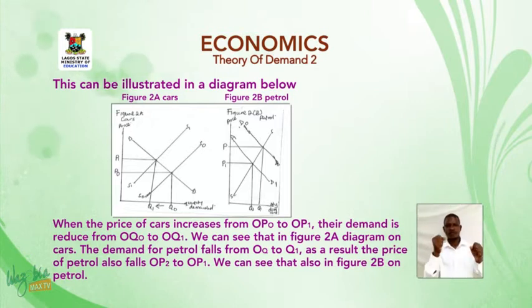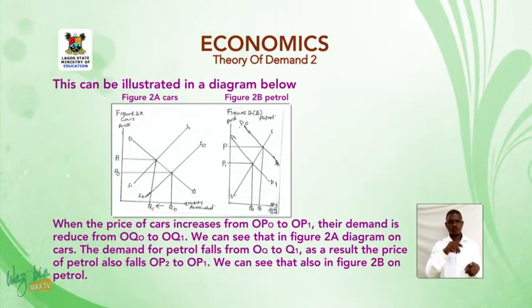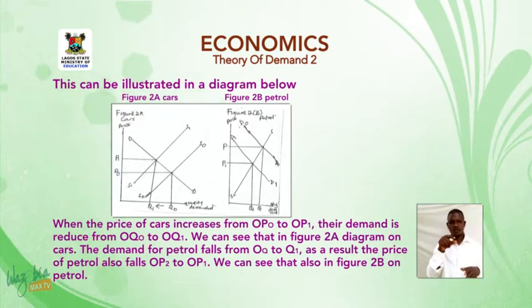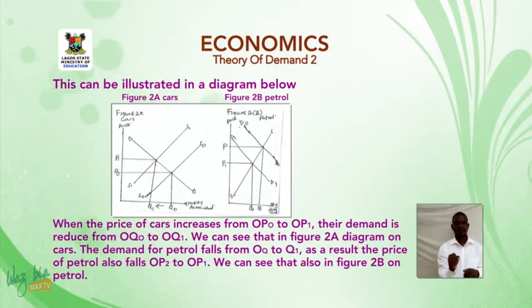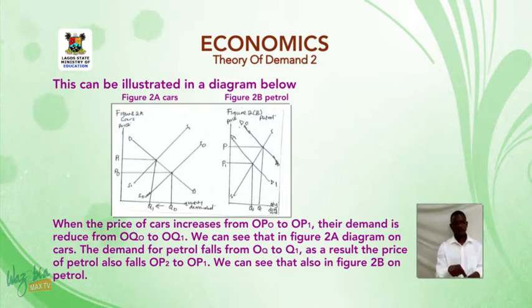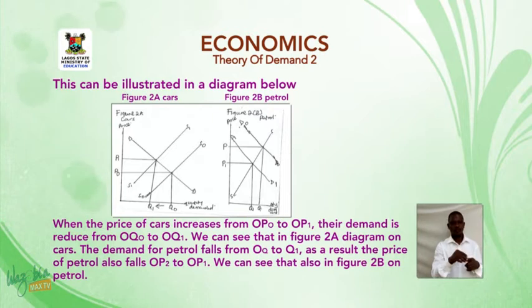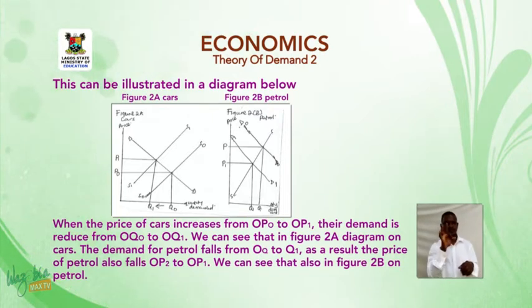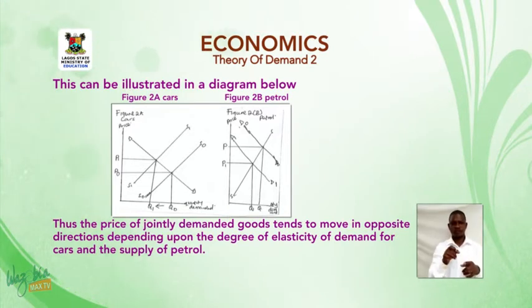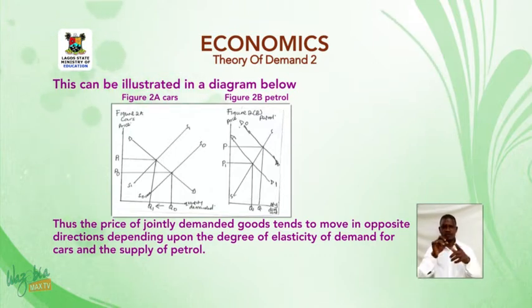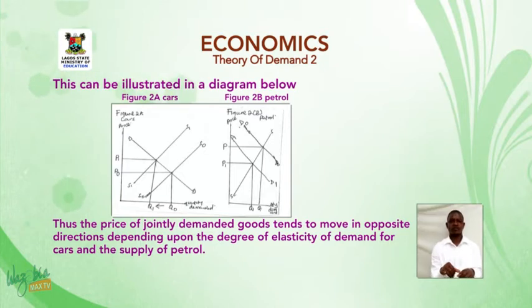Figure 2A shows cars, Figure 2B shows petrol. When the price of cars increases from OP0 to OP1, the demand is reduced from OQ0 to OQ1, as seen in Figure 2A. The demand for petrol falls from OQ0 to OQ1, and as a result, the price of petrol also falls from OP0 to OP1, as seen in Figure 2B. Thus, the prices of jointly demanded goods tend to move in opposite directions, depending upon the degree of elasticity of demand for cars and the supply of petrol.